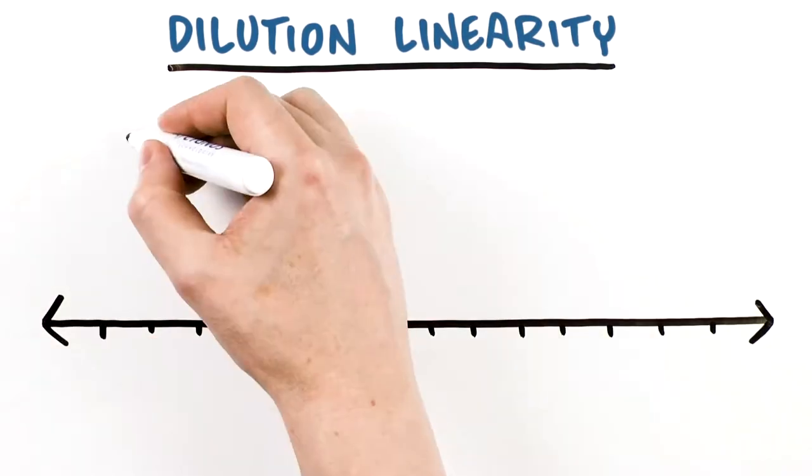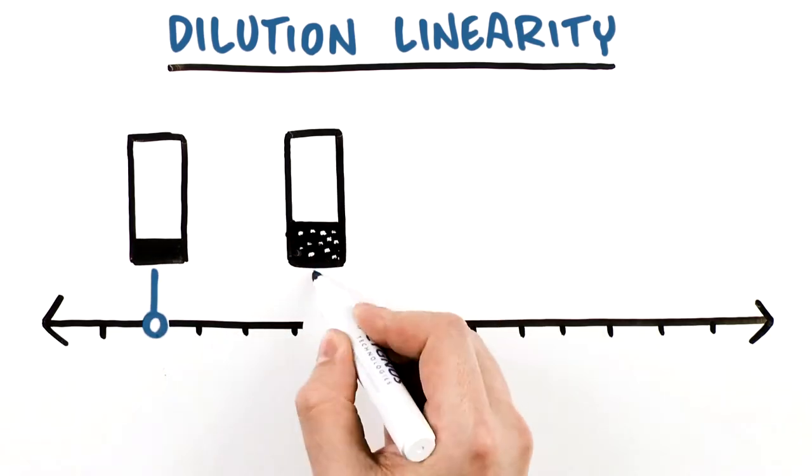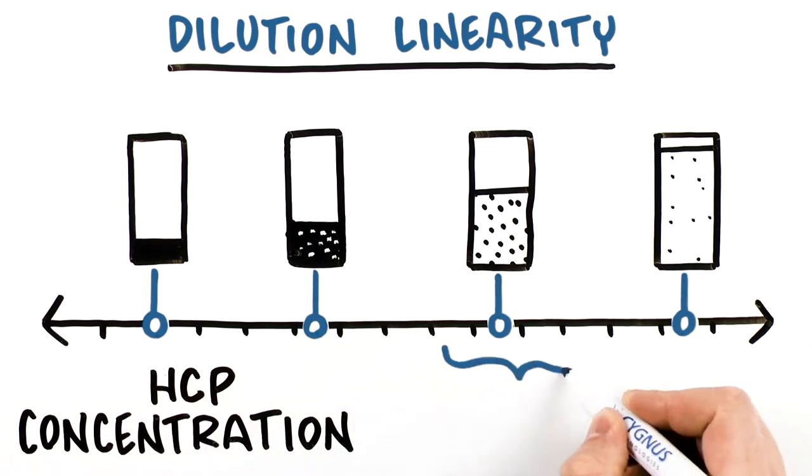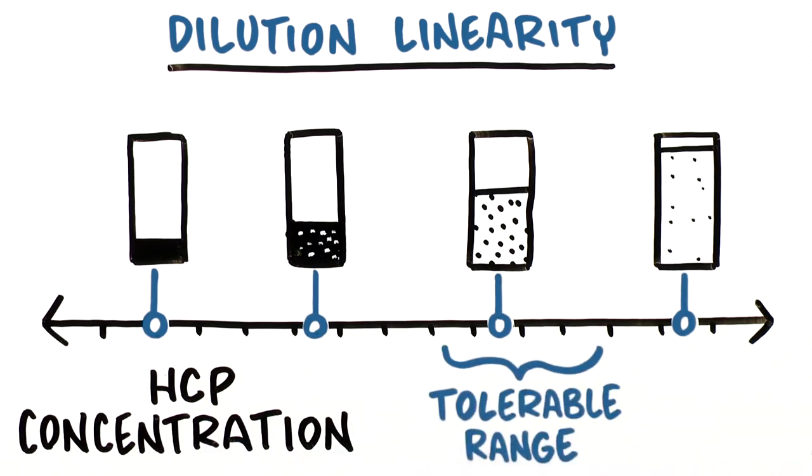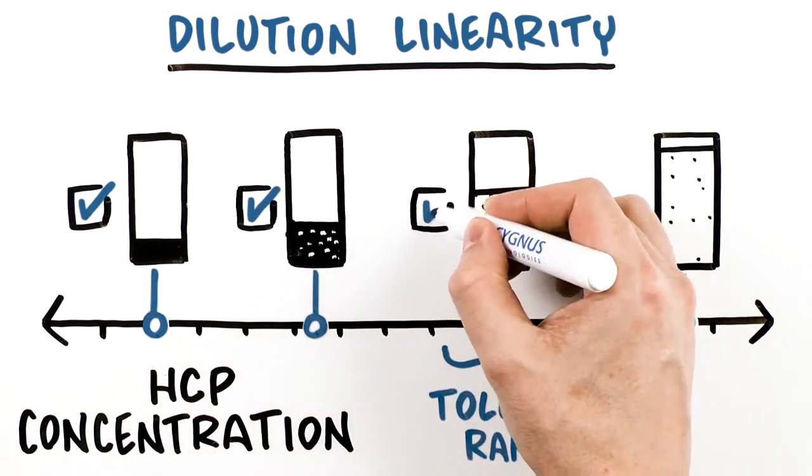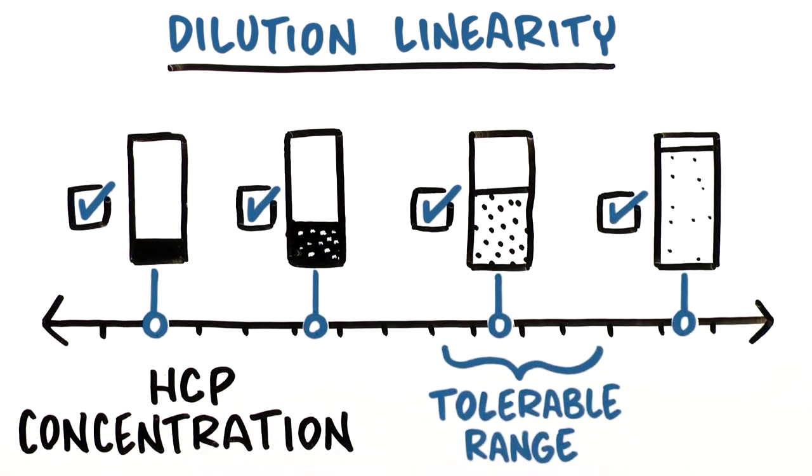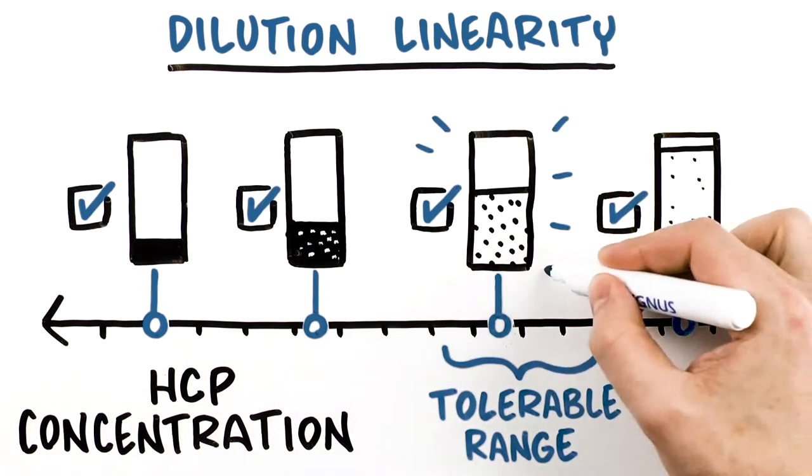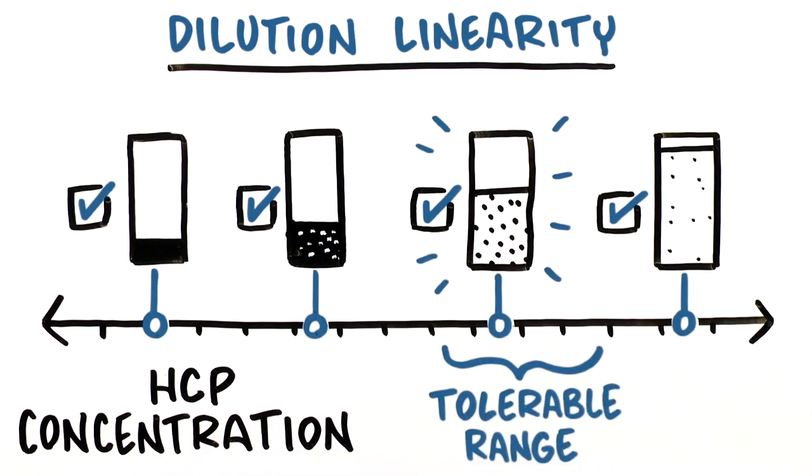Performing the experiment involves doubling a series of dilutions using an approved assay diluent to obtain HCP concentrations within a tolerable range. Each dilution is tested for quantity, and a dilution-corrected impurity concentration is determined. This cycle establishes freedom from the sample matrix and demonstrates the condition of antibody excess for impurities in the samples.